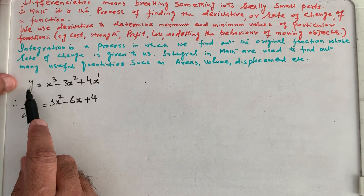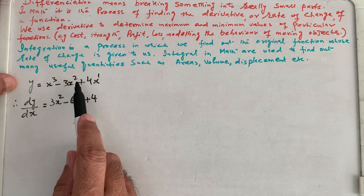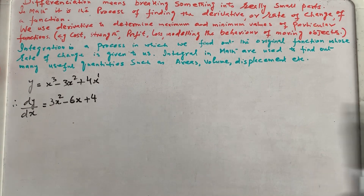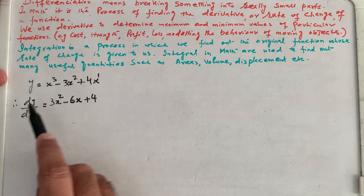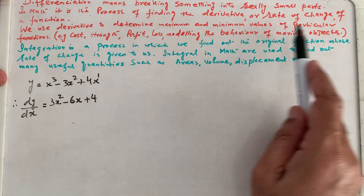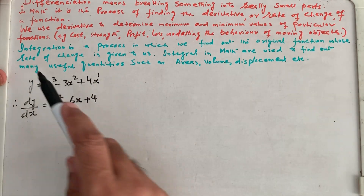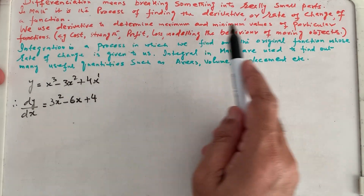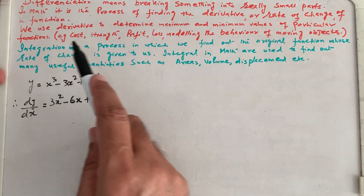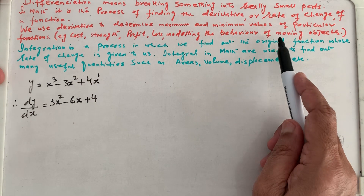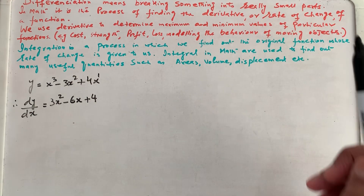The function f(x) was given — y can be written as f(x). When we differentiate it, we get this result. We use derivatives to determine maximum and minimum values of particular functions. For example, cost, strength, profit and loss, and modeling the behavior of moving objects. This is what differentiation tells us.